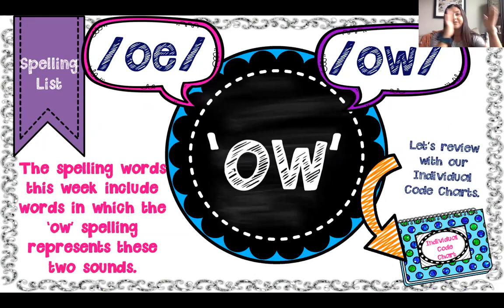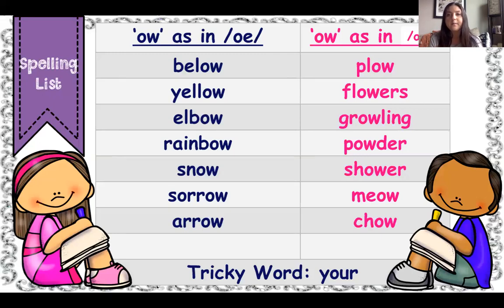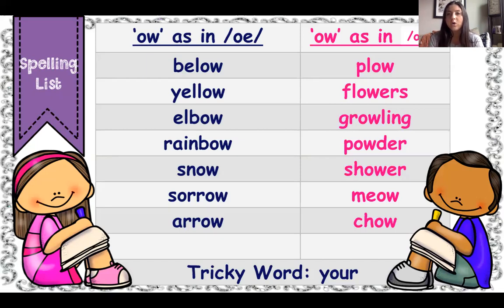OW can say O and OW can say OW. When OW says the O sound, I see it in the first column: below, yellow, elbow, rainbow, snow, sorrow, arrow. On the other side, OW says OW like in: flowers, growling, powder, shower, meow, chow.